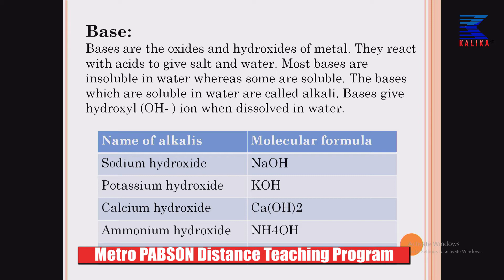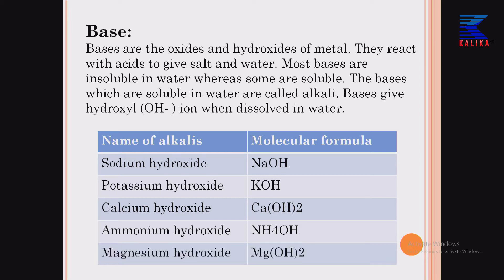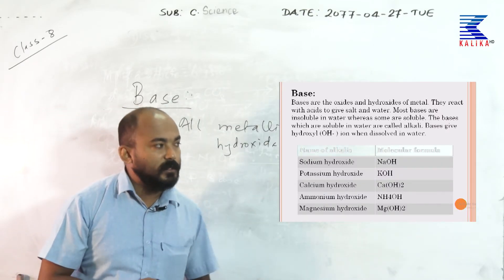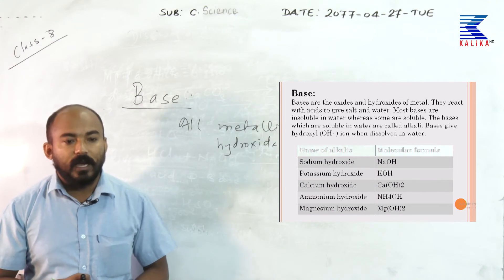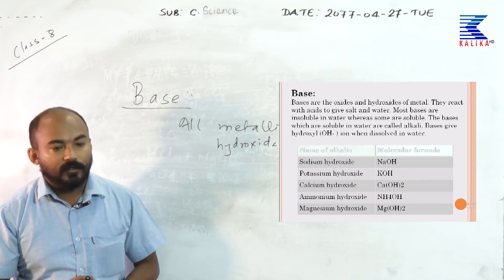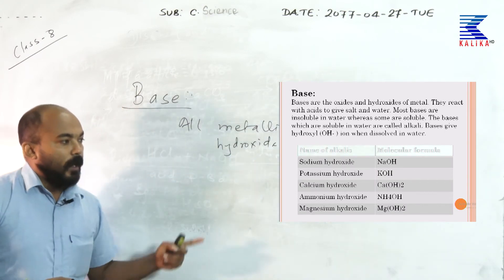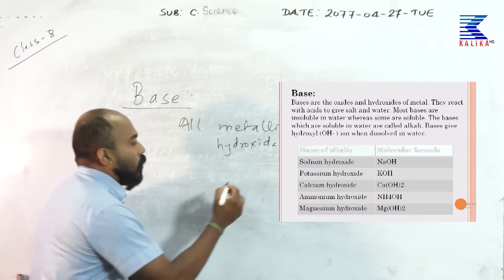Bases give hydroxide ions (OH⁻) when dissolved in water — this is a basic property of a base, the Arrhenius concept. For being a base, when dissolved in water, it must furnish OH⁻ (hydroxide or hydroxyl ion). Some examples of alkalis with their molecular formulas: sodium hydroxide NaOH, potassium hydroxide KOH, calcium hydroxide Ca(OH)₂, and ammonium hydroxide NH₄OH.